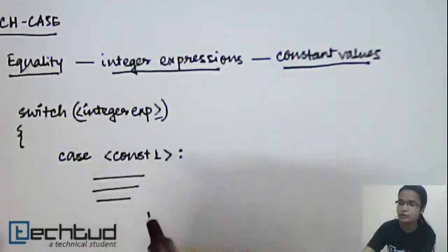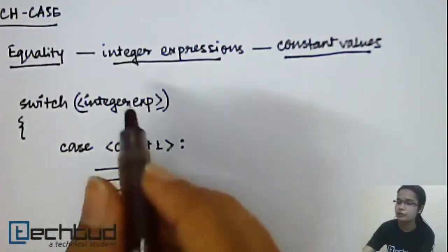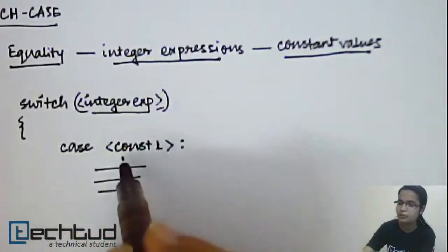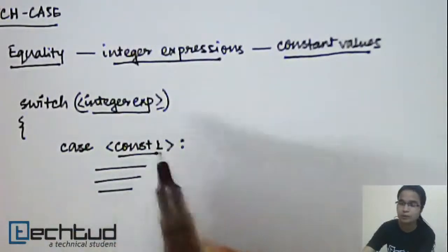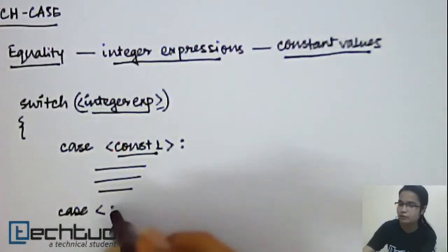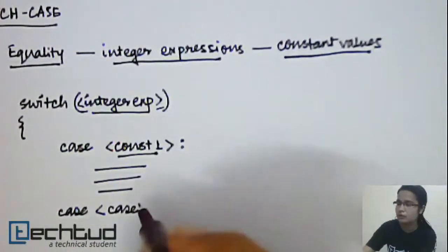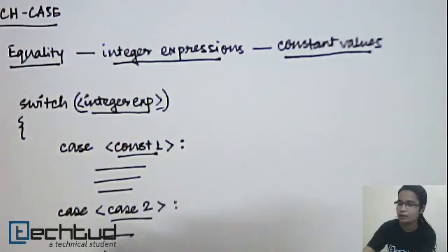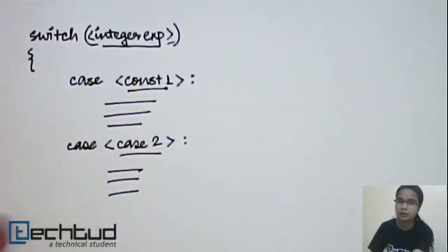After that, you write a set of statements which will be executed if this integer expression is equal to this constant value. So second, if you need to check some other equality with some other constant value, you write that here and then set of statements for that.